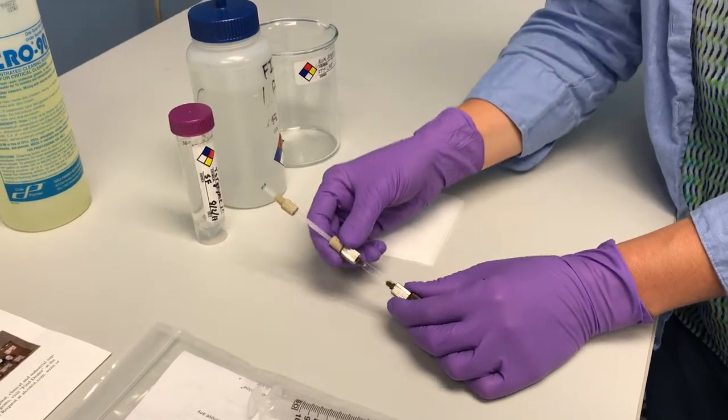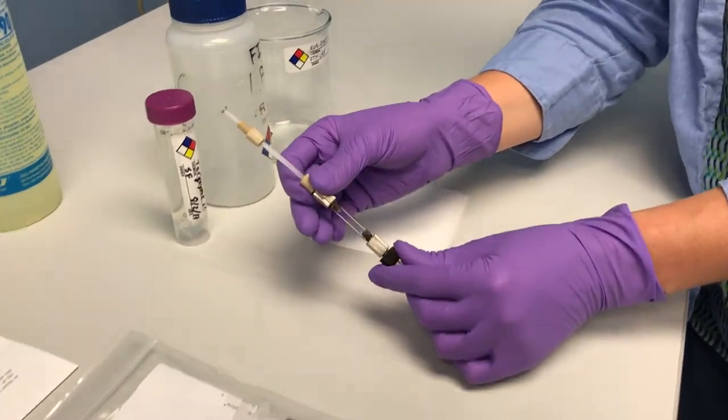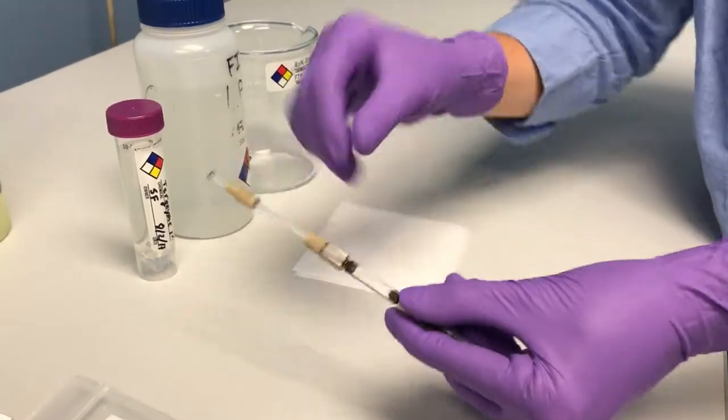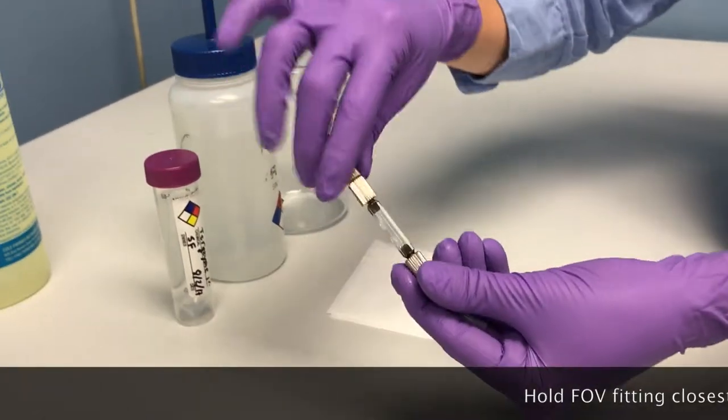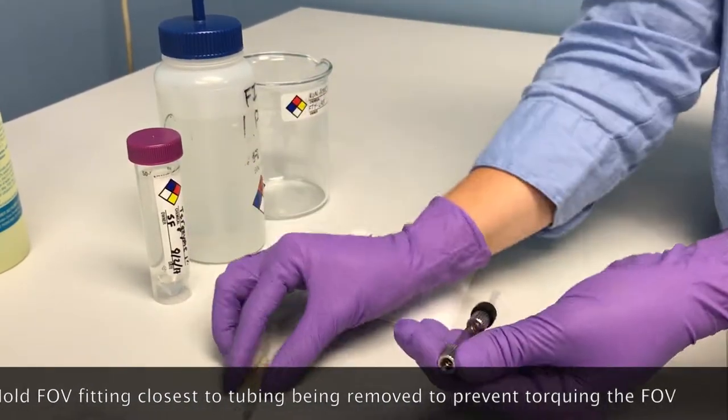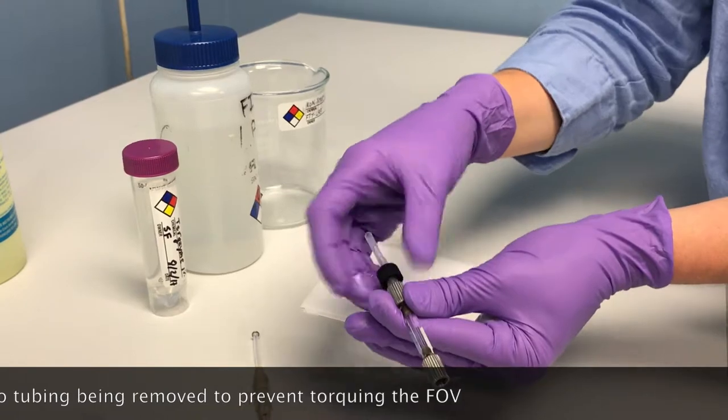This video is designed to show you how to clean your FOV flow cell for an 8100 or 8400 instrument. Remove your flow cell from the instrument and then carefully remove the associated tubing fittings above and below.